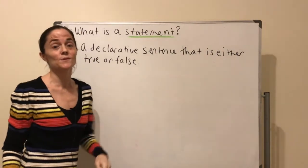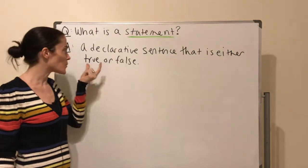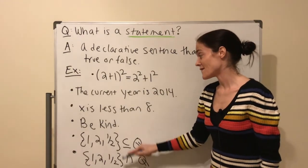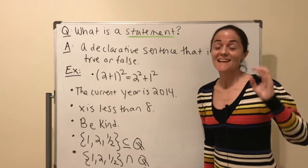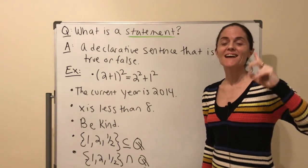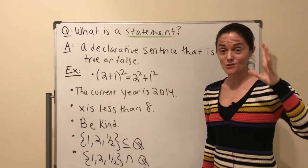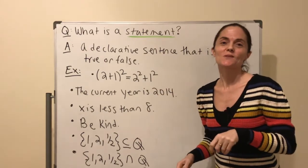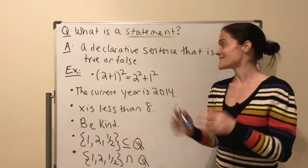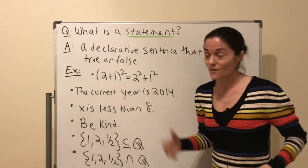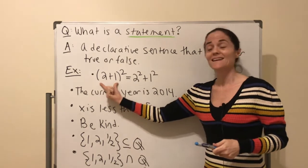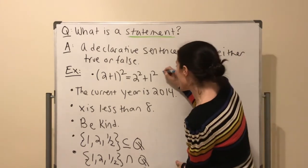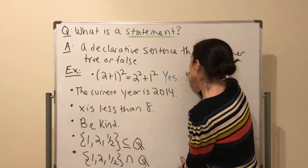Let's look at some examples. For each one, we ask: is it a statement, and if so, is it true or false? The first example: is (2+1)² = 2² + 1² a statement? Yes — you're declaring something that is either true or false. In fact it's false: the left side is 9 and the right side is 5. So it's a false statement.